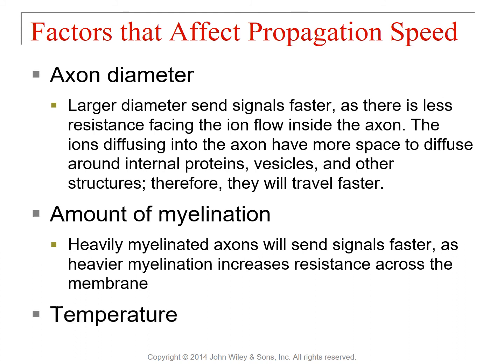Third: temperature affects propagation speed. Every bit of this is based on diffusion — when sodium comes into the cell in a graded potential or action potential, it is going down a concentration gradient. Diffusion happens faster at a higher temperature. So signals will propagate down an axon faster at a higher temperature.